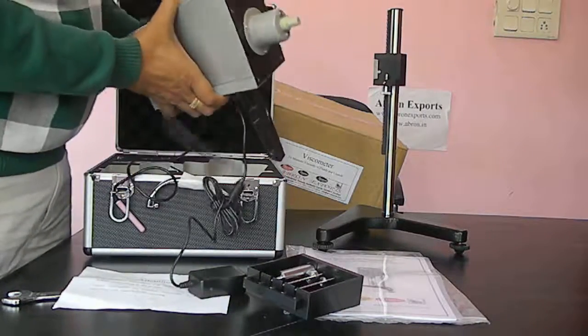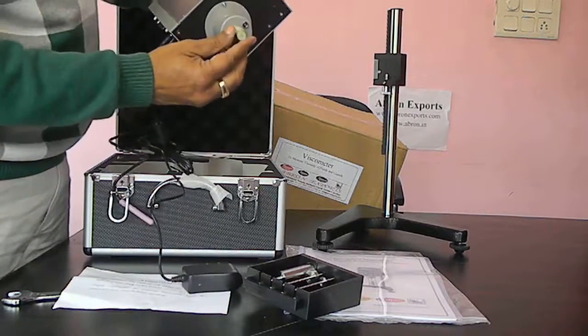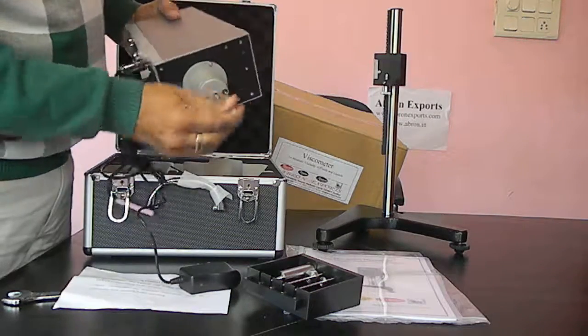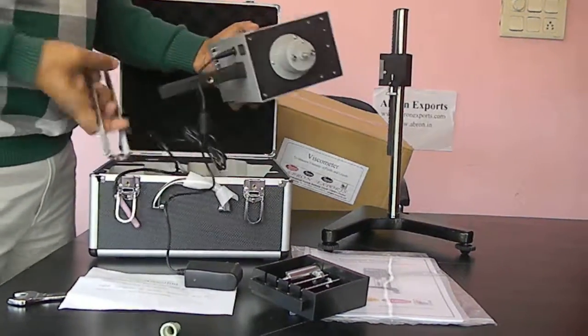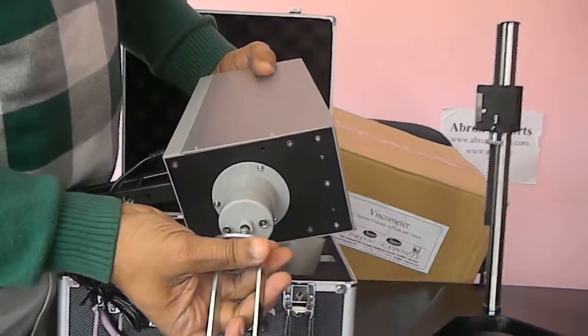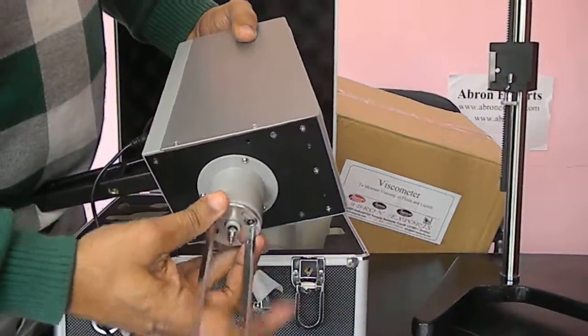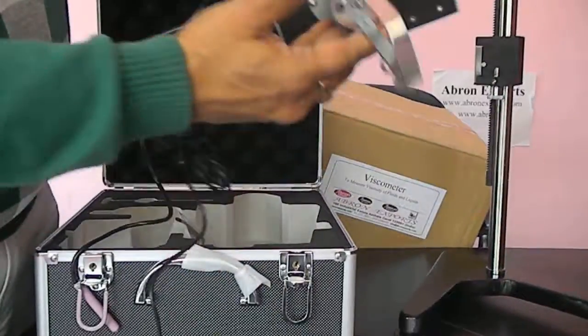This viscometer has a digital control. We first remove this for putting the attachments. This can be put only after this has been removed. This secures the place.